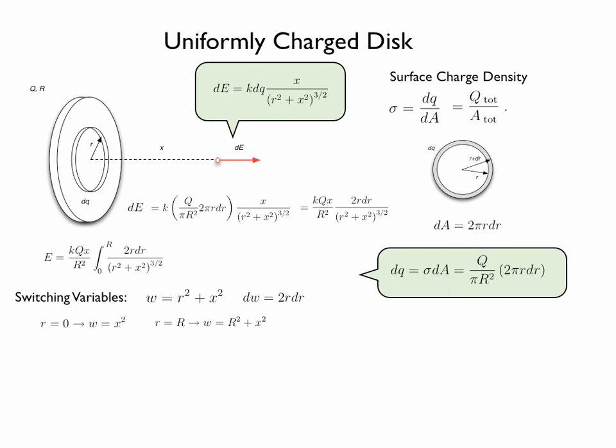With the new variable, the integral for the electric field due to the disk becomes k times the charge Q, times x over the radius of the disk squared, times the integral of dw over w to the power of three halves, with limits from x squared to R squared plus x squared.